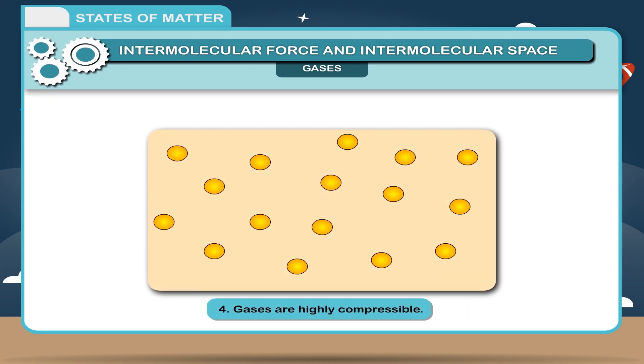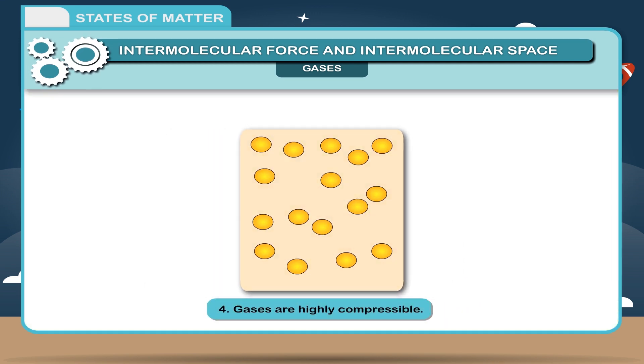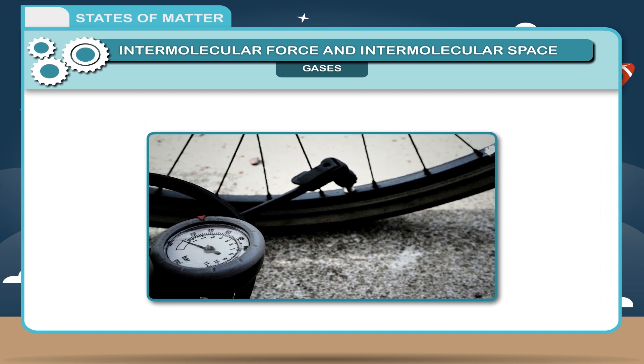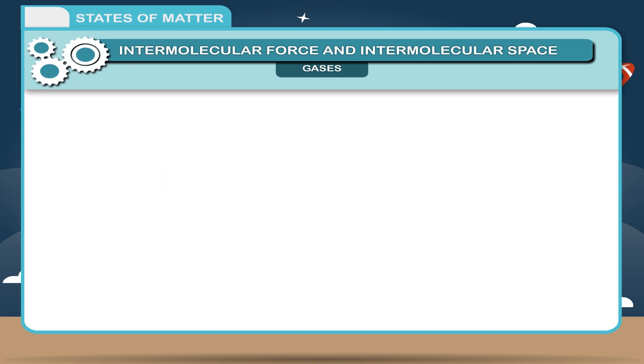Gases are highly compressible. Reason: Owing to large intermolecular spaces between them, gases can easily be compressed. What does a mechanic do when he fills air in your cycle tube? He allows compressed air to enter the cycle tube and fill it.